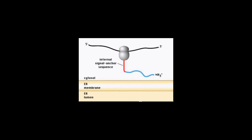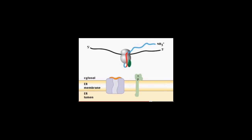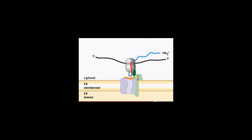In the second situation, there is no N-terminal signal sequence, so the first one is an internal signal sequence. It's recognized by the signal recognition particle, brought to the signal recognition particle receptor, and docks the ribosome on the Sec61.